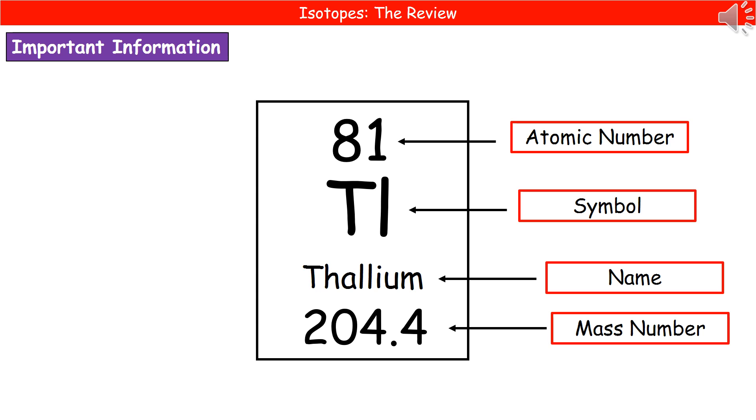You then also have two bits of information about naming our element. So we have the symbol, which is one, two or three letters long. And then we have the full name. And in your chemistry exam, you'll obviously get a periodic table as part of your data sheet. So you don't have to memorize anything from it. You just need to know how to use it.